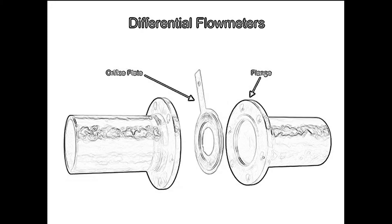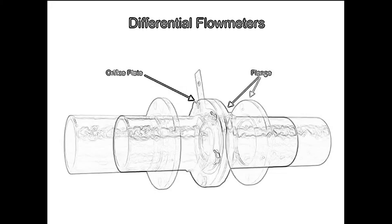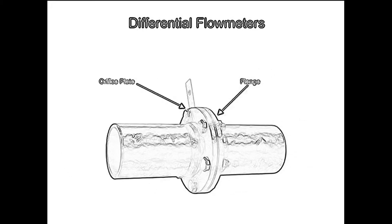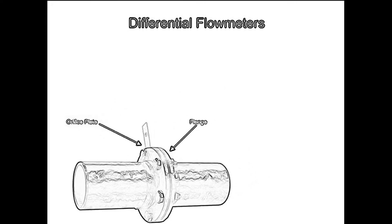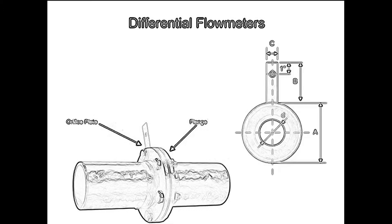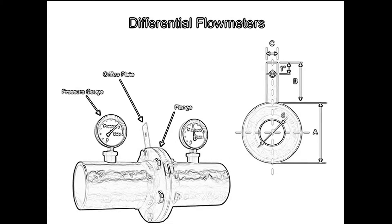Whether venturi tube, flow nozzle, or orifice plate style, the differential flowmeter is an inline instrument installed between two pipe flanges. The orifice plate is comprised of a circular metal disc with a specific hole diameter that reduces the fluid flow in the pipe. Pressure taps are added on each side of the orifice plate to measure the pressure differential.